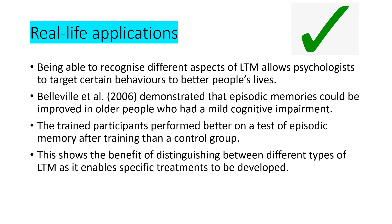Another strength is real-life applications. Being able to recognise different aspects of long-term memory allows us as psychologists to target certain behaviours to better people's lives. A study by Belleville et al demonstrated that episodic memories could be improved in older people who had mild cognitive impairments. They had a control group and a training group — the trained participants performed much better on a test of episodic memory than the control group. This shows the benefits of distinguishing between different types of long-term memory, as it enables specific treatments to be developed. You can also think of that in terms of the economy — if we know which training helps individuals, it's more likely we'll save money by helping them more efficiently.